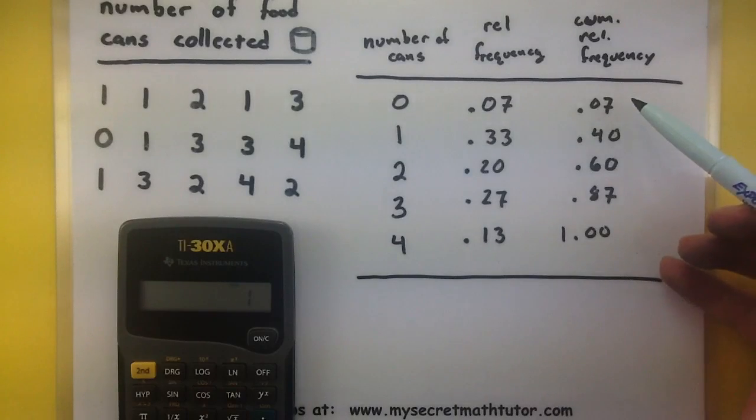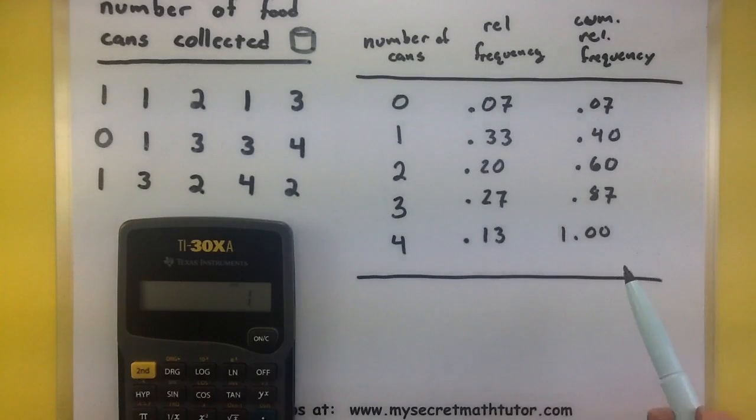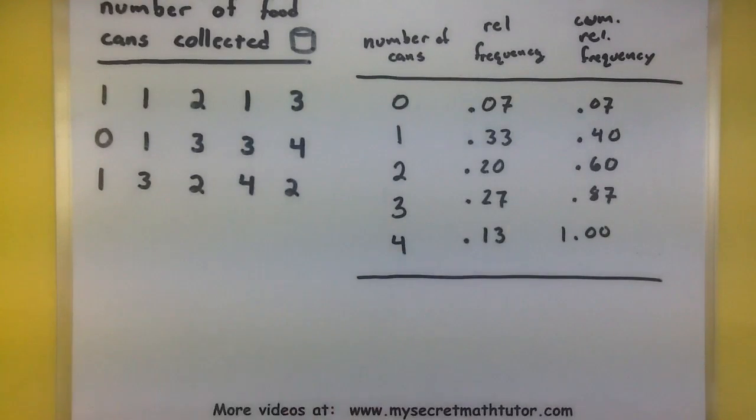So just like that, now we have the cumulative relative frequency. I can see that each of these represents a total of the things before it. If you'd like to see some more math videos, please visit MySecretMathTutor.com.